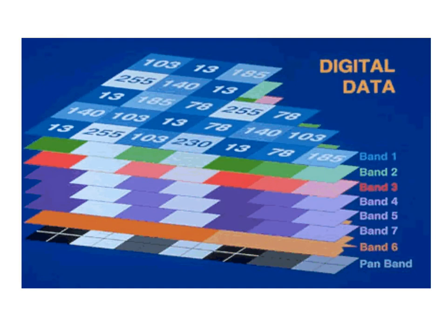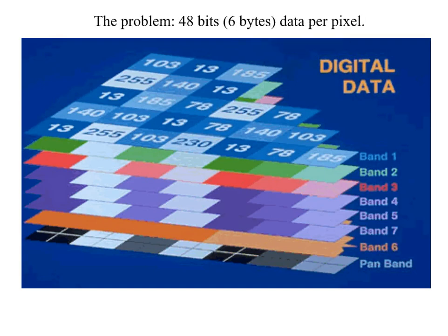The problem we're trying to solve with image classification — particularly this form of classification we're starting on this week — is the problem of complexity: the complexity of remotely sensed imagery. In remotely sensed imagery we have an incredible level of complexity. In Landsat Thematic Mapper imagery, for example, the raw imagery that we work with is 8-bit data.